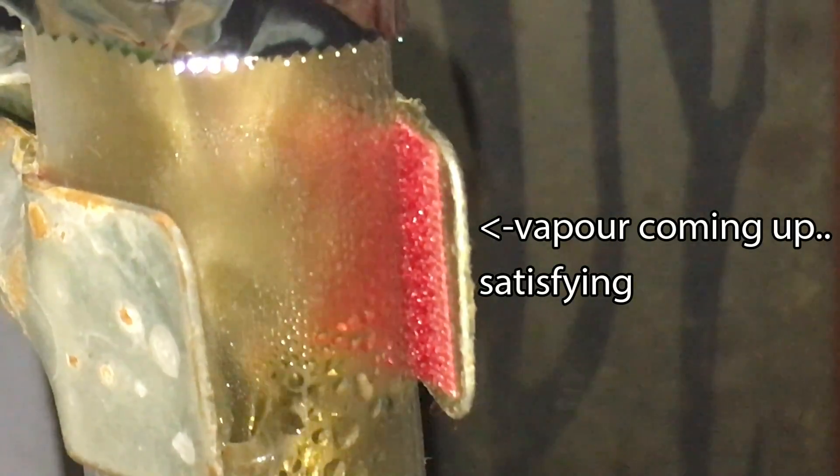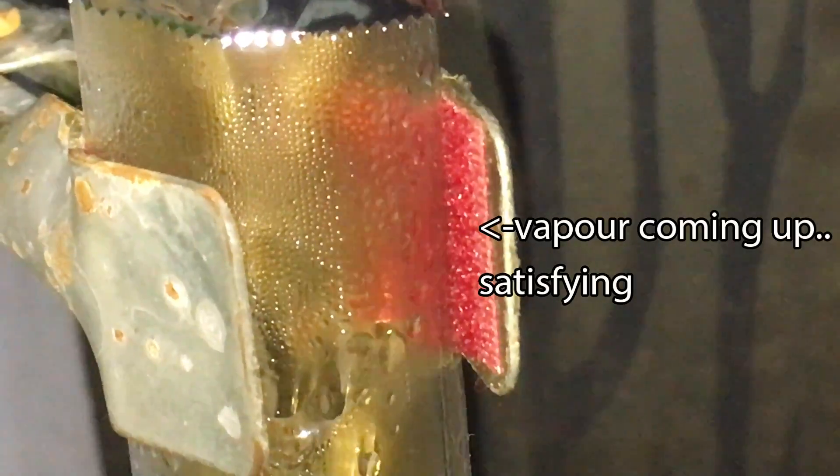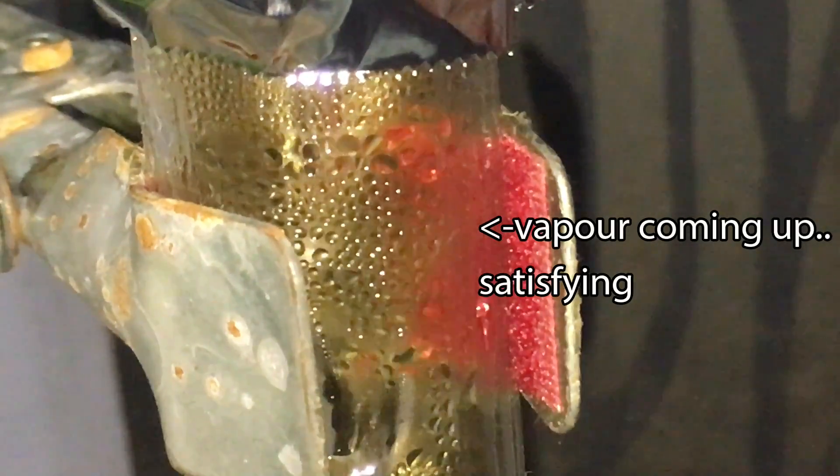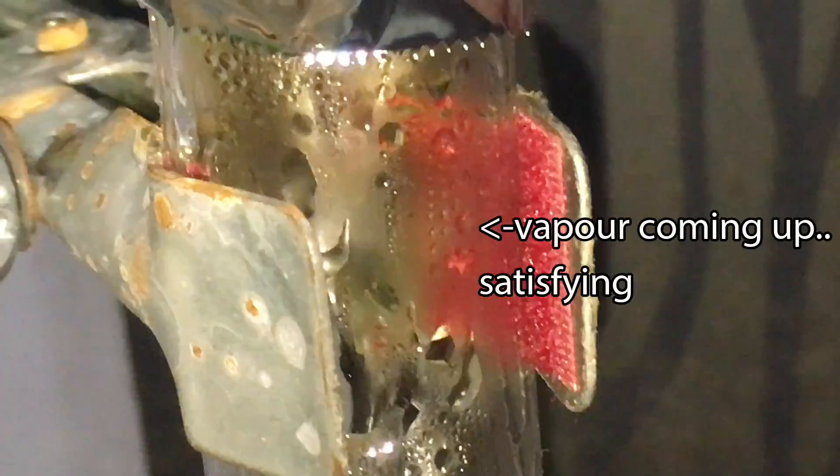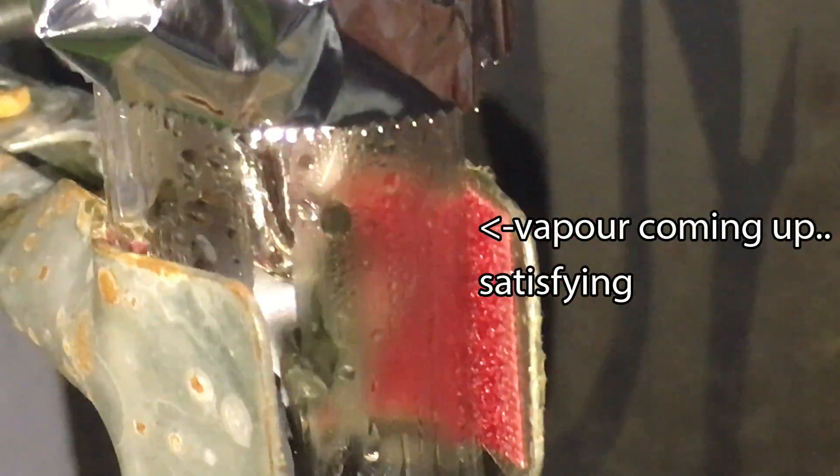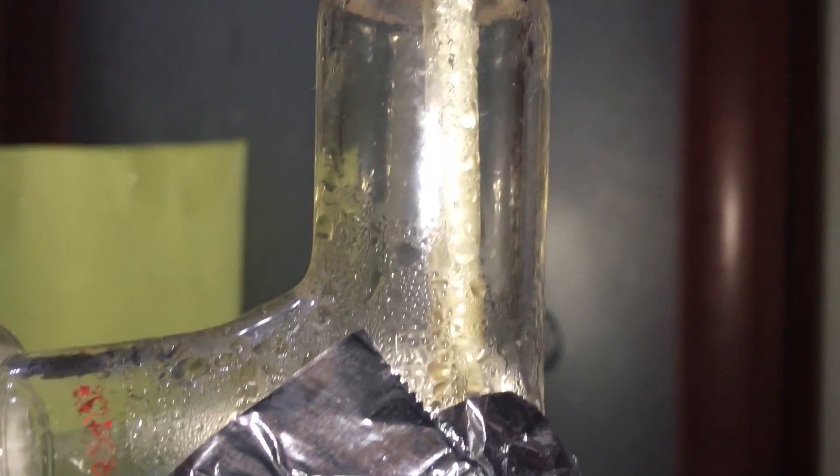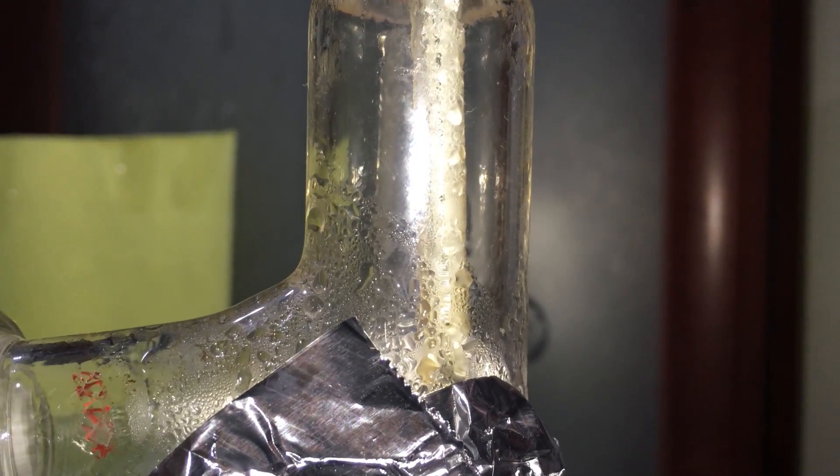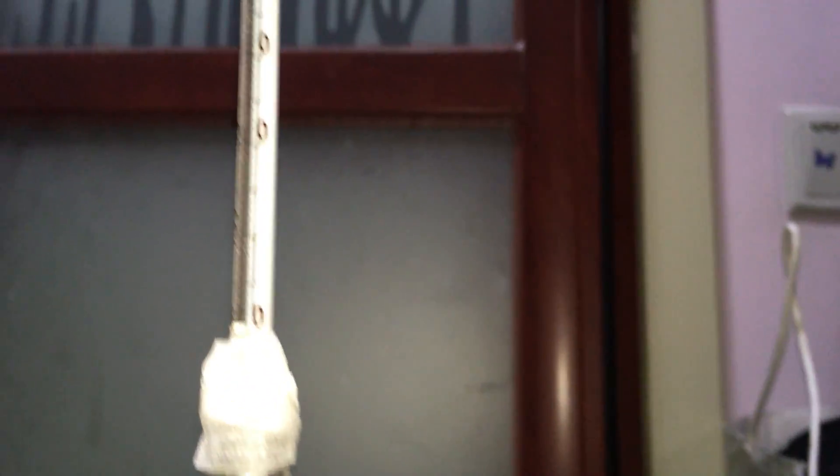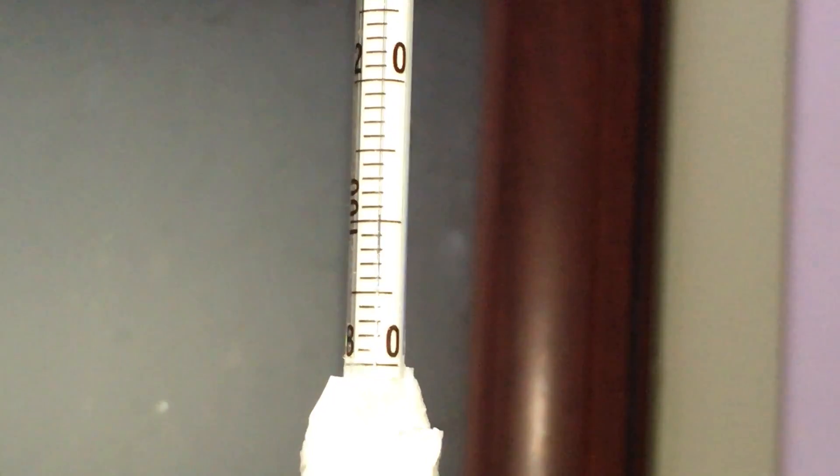The fractionating column is used to ensure that the water comes off before the nitric acid does. If you don't have one, never mind and just set up a simple distillation system, but your yield will be a little bit lower. As you can see, the vapor is condensing and climbing up the fractionating column. Now the vapor has made it over. The temperature now is around 100C. It indicates that water is being distilled off. The distillate being collected is useless and is discarded.